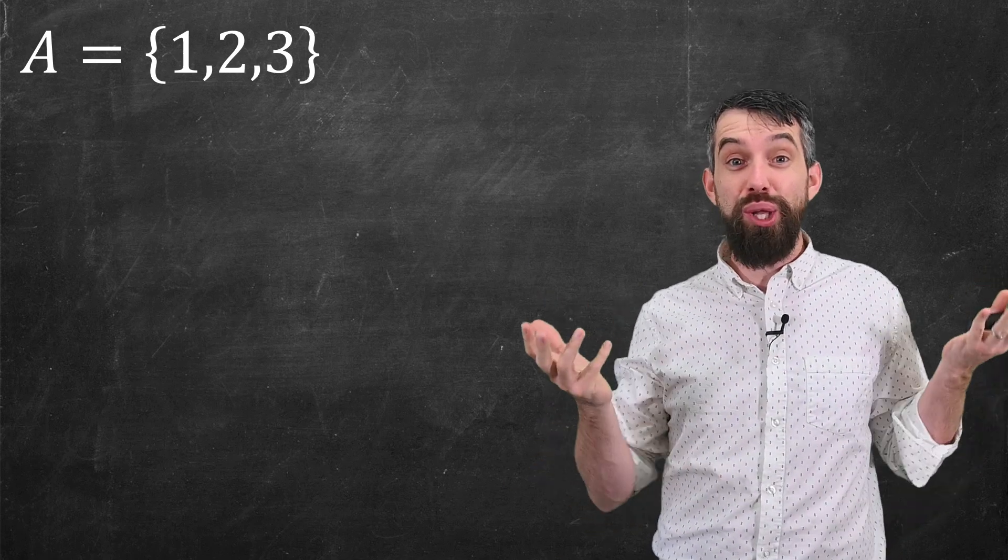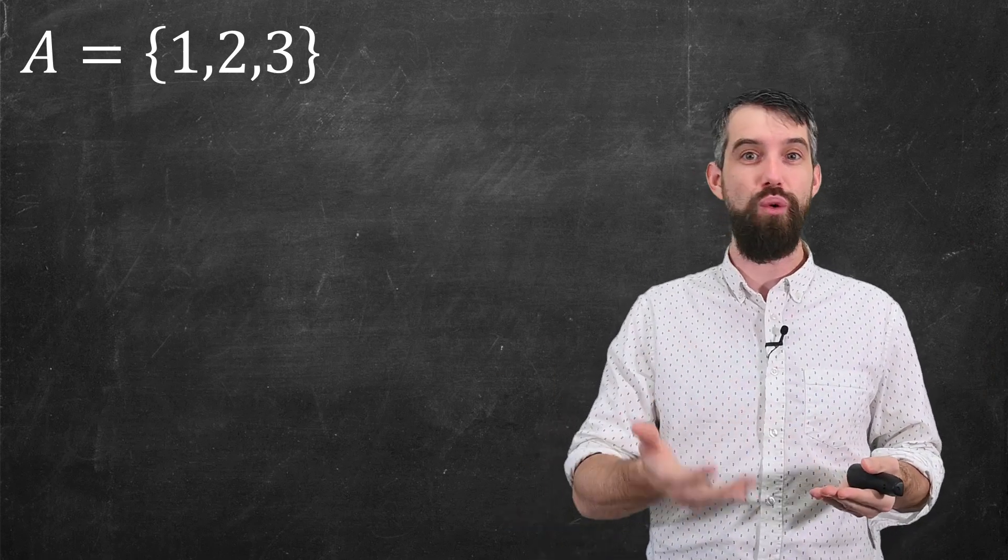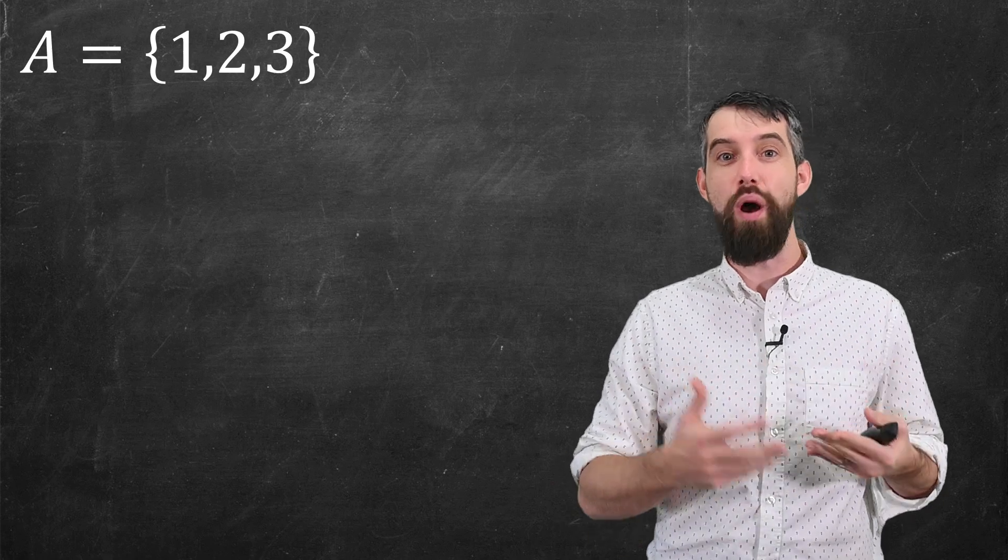The big idea of a set is just a collection of objects. It's kind of like a box with different things inside of it like an apple and orange and a banana or in this case one, two, and three.